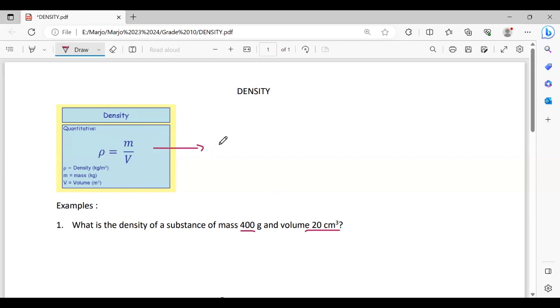If we arrange this formula, it becomes: if you want to find mass, mass equals density times v. And if v is the subject, it means volume equals mass over density. Now in this case number one, we're going to find density. So density or ρ equals m over v.